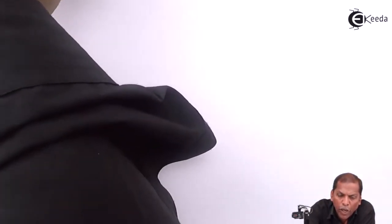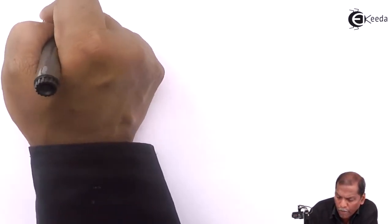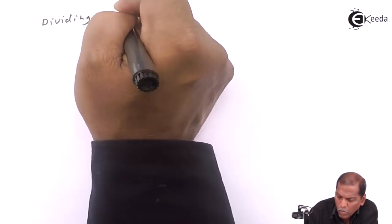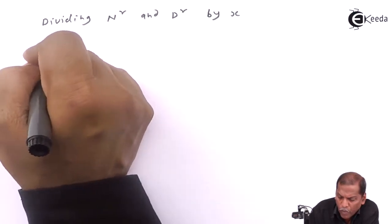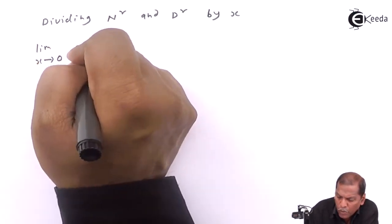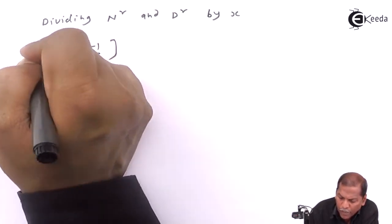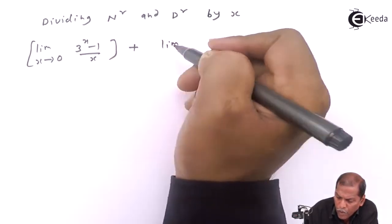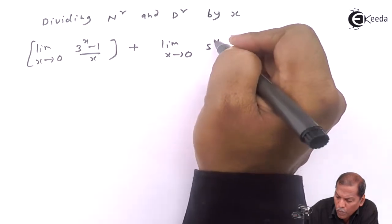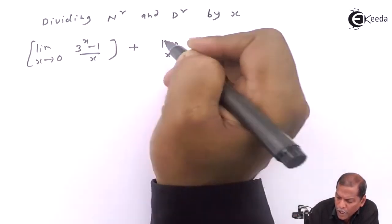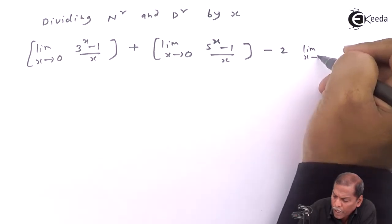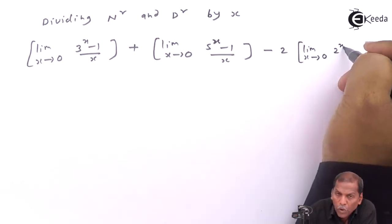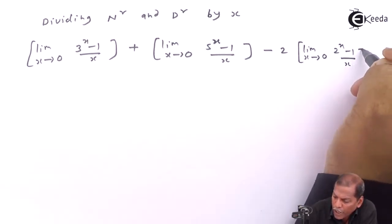Now to get the rule we have to divide numerator and denominator by x. So the next step will be limit x tends to 0, 3 raise x minus 1 upon x as first limit, plus limit x tends to 0, 5 raise x minus 1 upon x as second limit, and then minus 2 in bracket limit x tends to 0, 2 raise x minus 1 upon x as third limit.